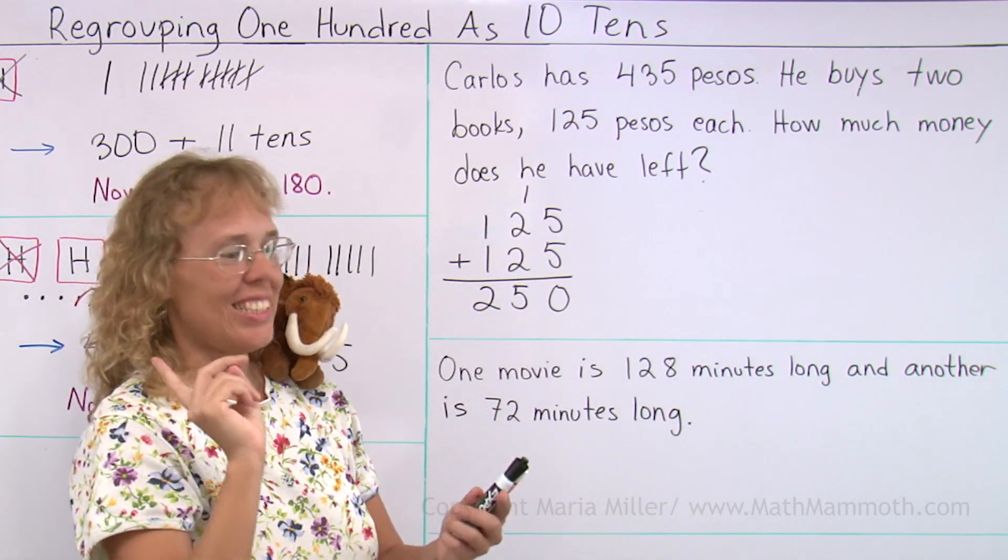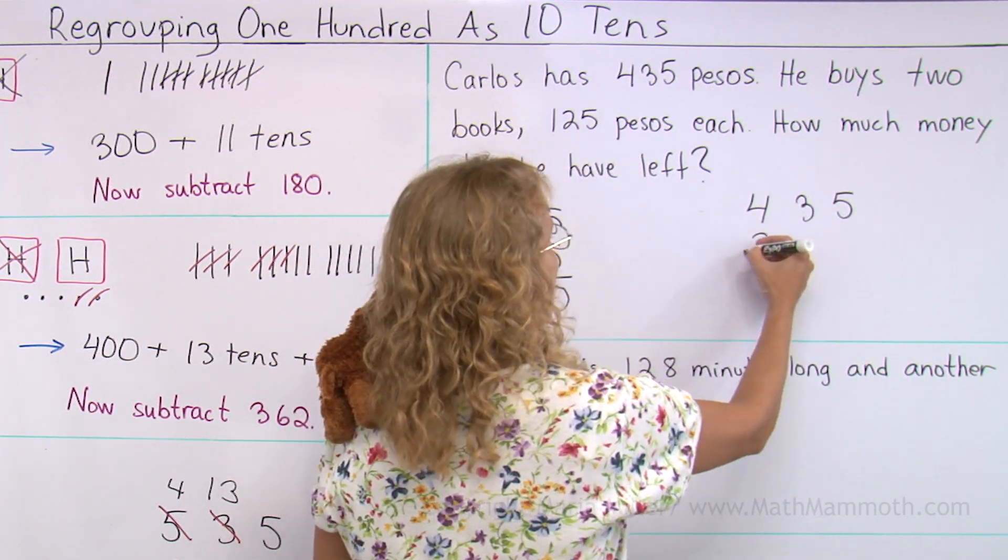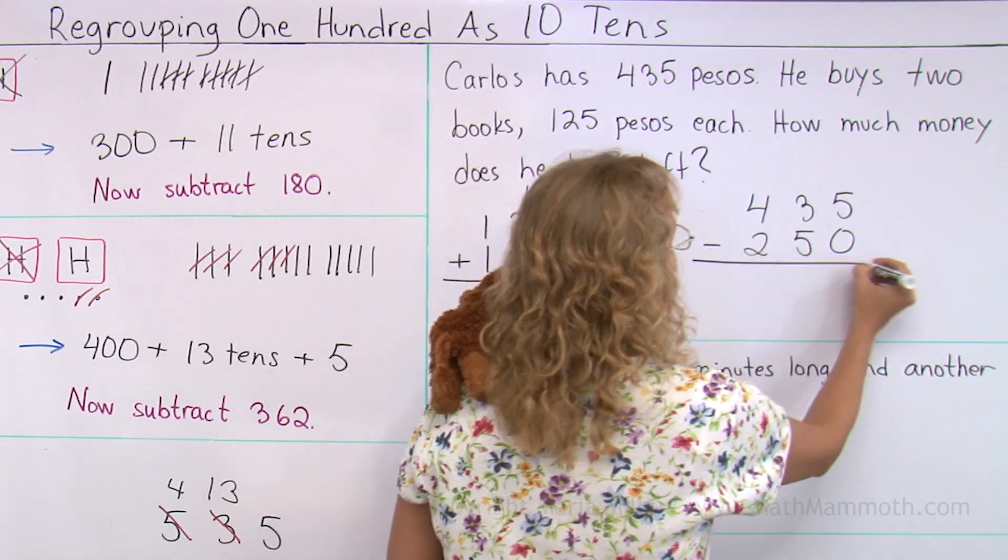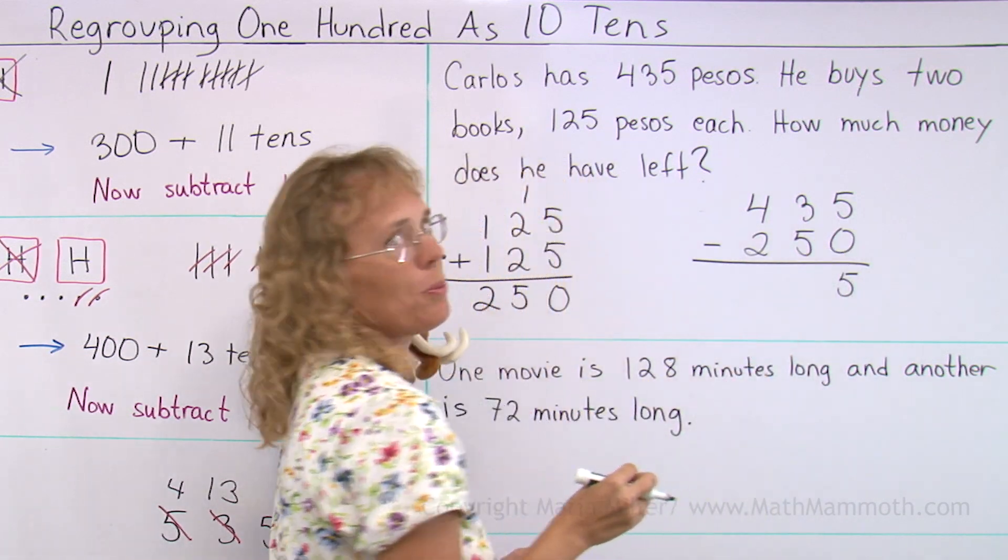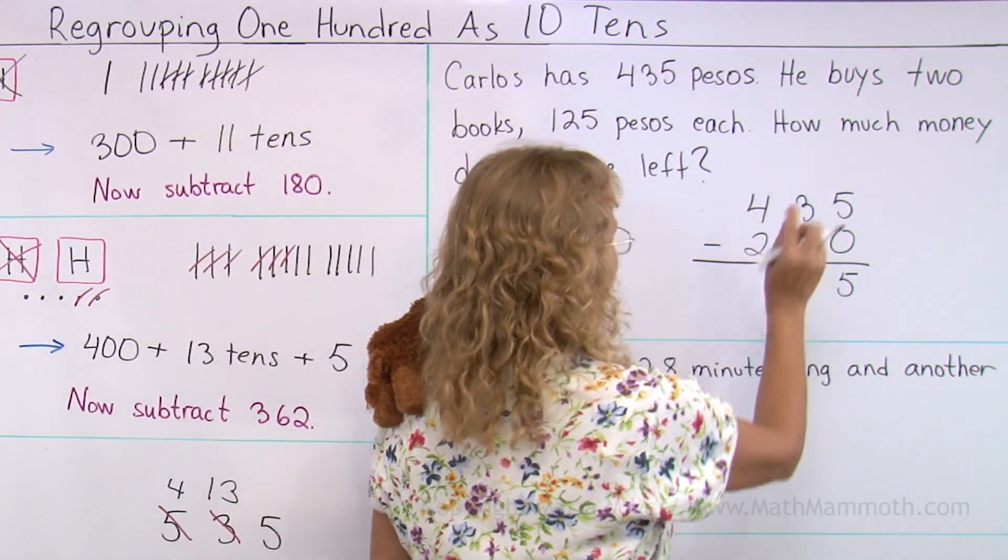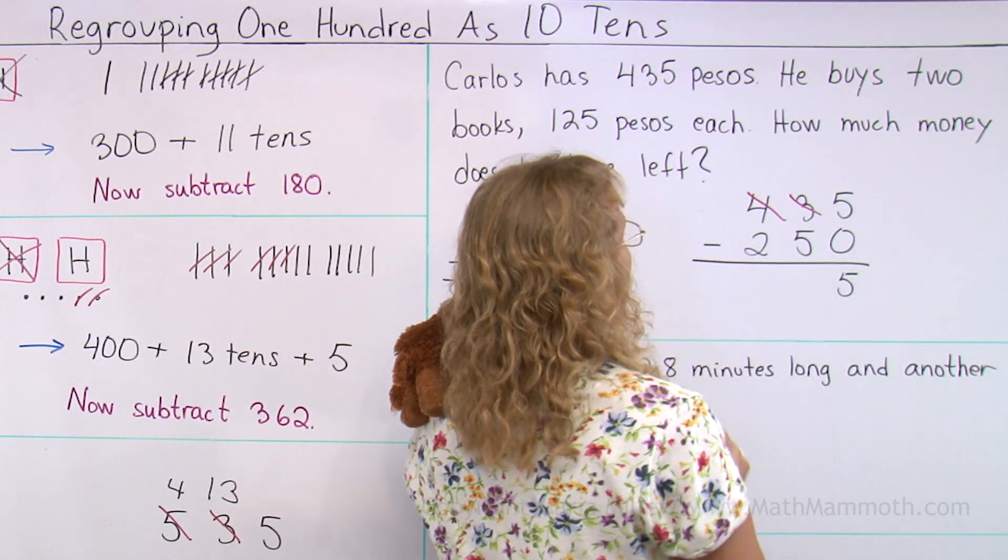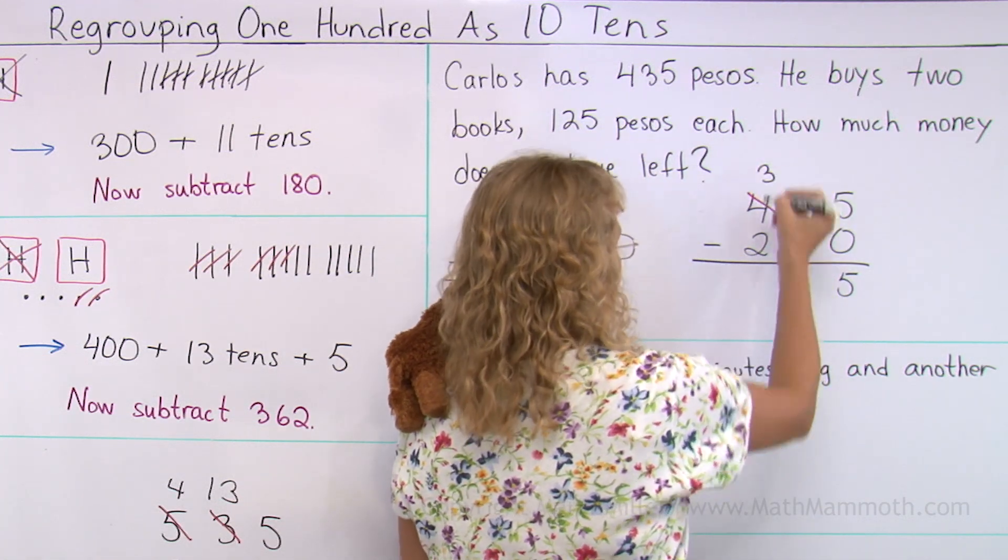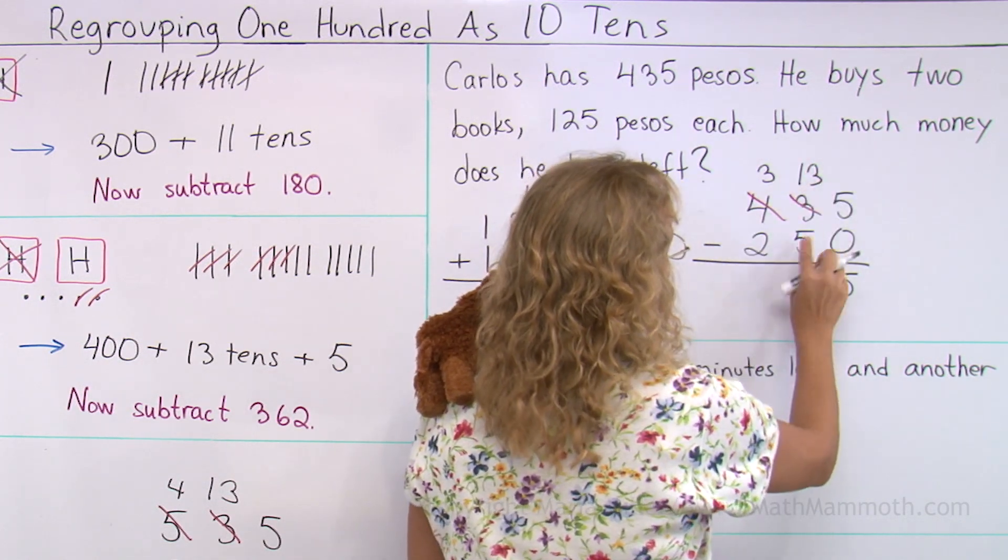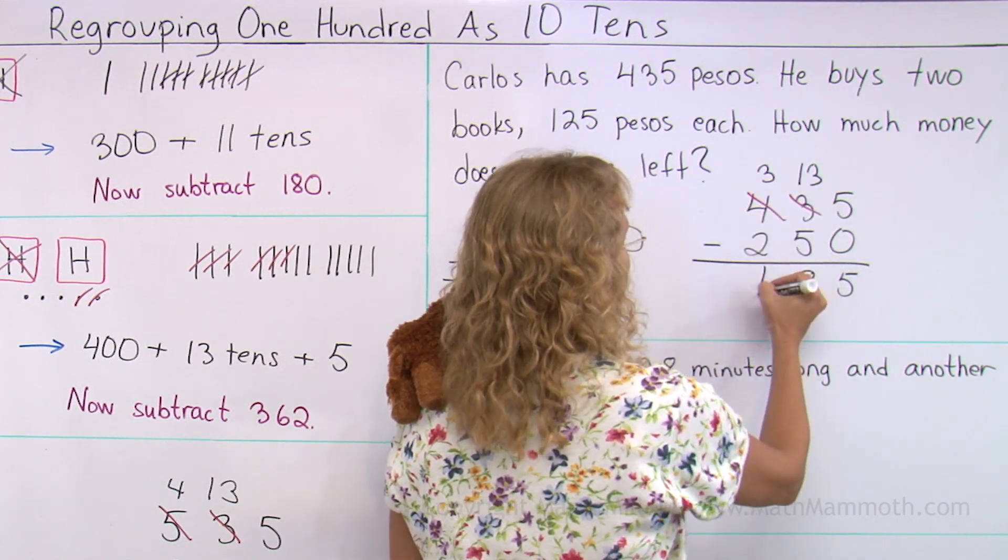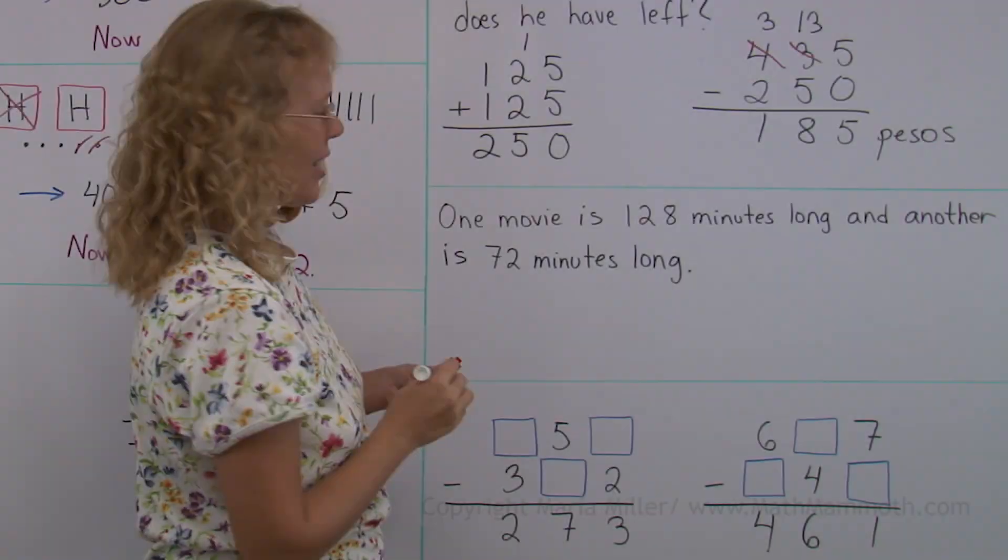And now what do we do? Subtract, yes. He has 435 pesos when he goes to the store and he spends 250 pesos. Okay, five minus zero is five, three minus five - is not two! Remember, from three you cannot subtract five, we need to regroup. That's what we just learned, right? So that's good. Instead of four hundreds I have three, instead of three tens I will have 13. 13 minus five is eight, and then over here one. He has 185 pesos left.